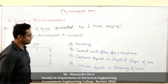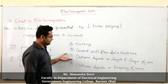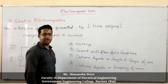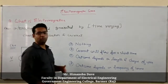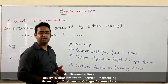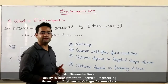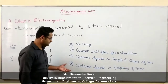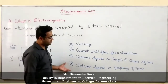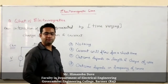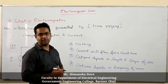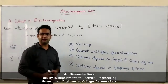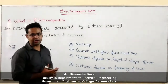The third statement is that the outcome depends on the length and shape of the wire. The length and shape can be significant factors. The outcome also depends on frequency. So source frequency can be a dependable factor. These things we haven't discussed in the ideal case, but we will discuss them in electromagnetic wave theory.